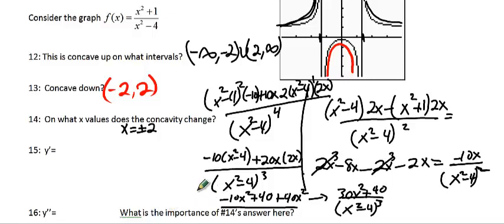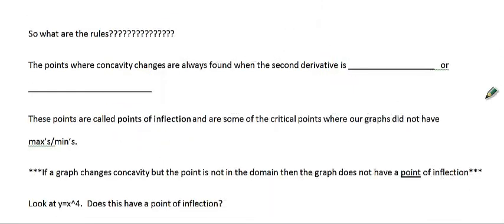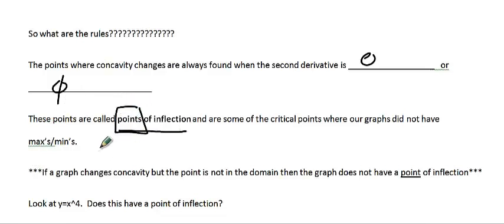What we want to do is talk about what happens with this answer. In the last couple of problems it set equal to 0, but in this case, if you plug in plus or minus 2, the second derivative does not exist. So these points where concavity changes — we've seen it happens when the derivative equals 0 or when it doesn't exist. Concavity changes are always found when the second derivative is 0 or undefined. These are called points of inflection. The undefined case is a little tricky — if it's a vertical asymptote, it may change concavity but doesn't necessarily qualify as a point of inflection.